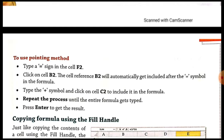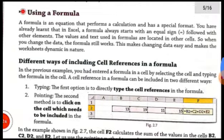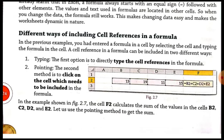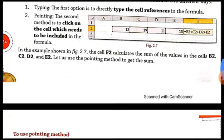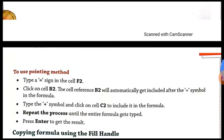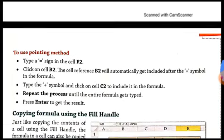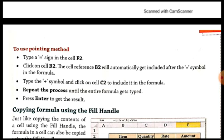Just press Enter and you will get the result in your cell. The pointing method is a very easy method of including cell references in a formula. If you are not very comfortable with typing cell references, you can use this pointing method for creating a formula easily in your Excel sheet. We will stop here. In the next video, we will continue with the next topic, which is copying formula using the fill handle. Till then, thank you.